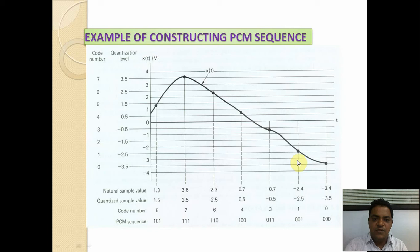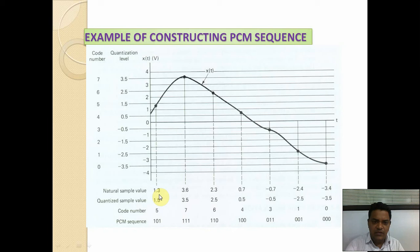For the construction of a PCM sequence example: code numbers are given starting from 0 to 7, and quantization levels range from minus 3.5 to plus 3.5. The natural sample values are 1.3, 3.6, 2.3, 0.7, minus 0.7, minus 2.4, and minus 3.4. These are then rounded to the nearest quantization level.